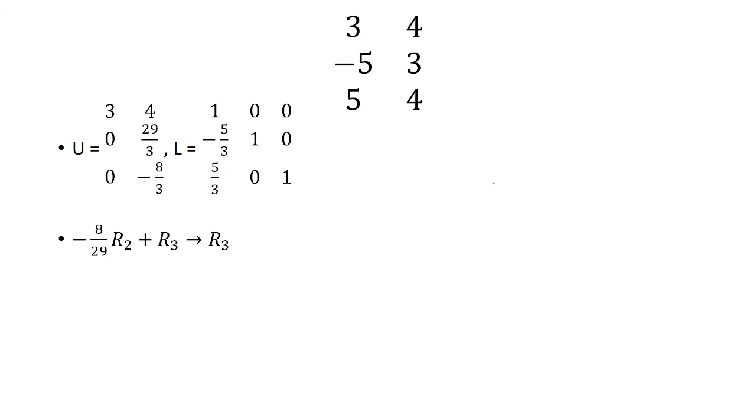So now in our matrix L, this number is just going to be the opposite sign of 8 over 29, so it's going to be positive 8 over 29. And so this is going to be my LU decomposition for this matrix. See you next time.